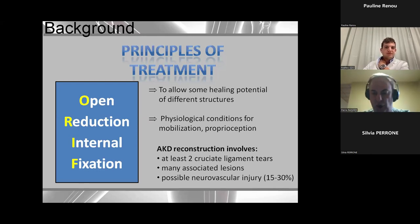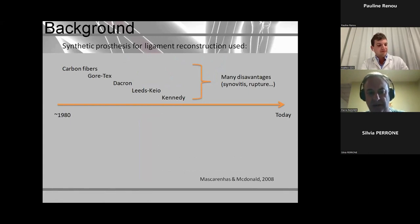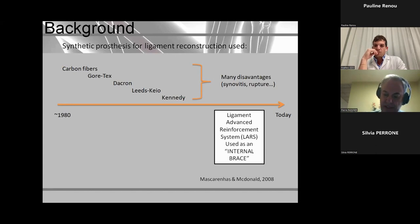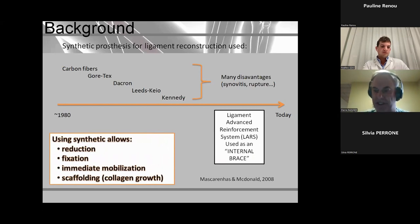In my definition of acute knee dislocation, you need at least both cruciates torn. If only one cruciate is torn, it's not for me an acute knee dislocation. Regarding artificial ligaments, there's a long story — carbon fiber, Gore-Tex, Dacron — they all had problems including synovitis when they broke. But now we've got the LARS, the Ligament Advanced Reinforcement System, which I've been using for 30 years. We use it as an internal brace — a scaffold. You reduce, fix with the LARS, and mobilize the patient, and the LARS will help get scaffolding of collagen tissue for a good result.